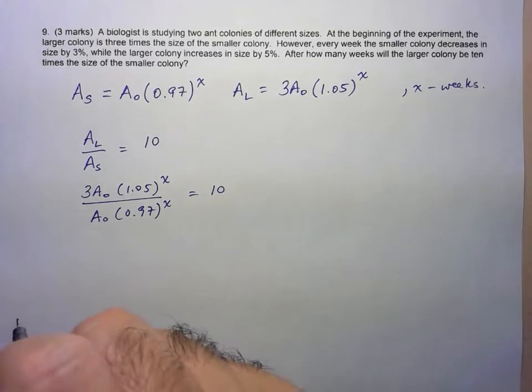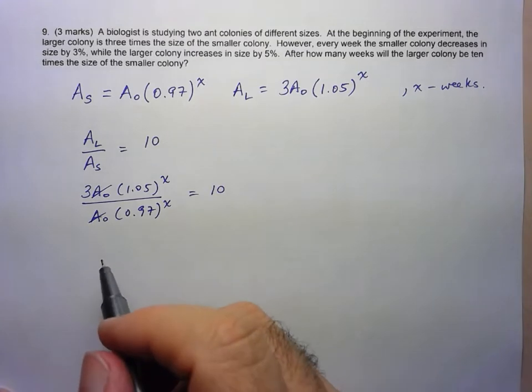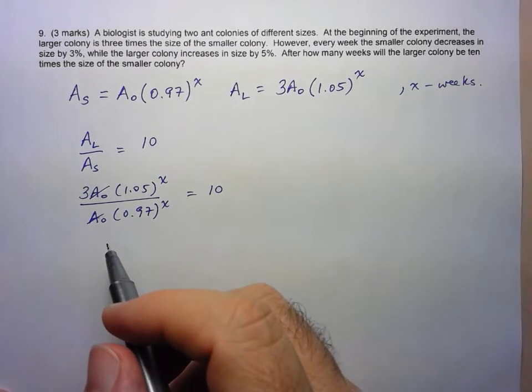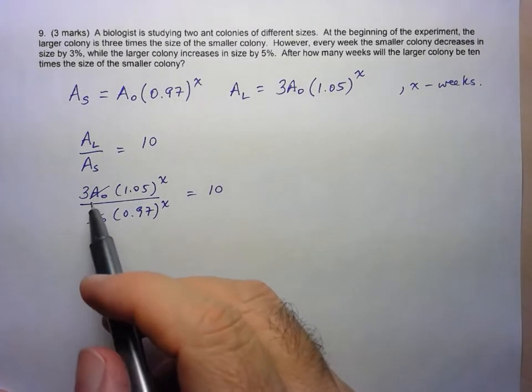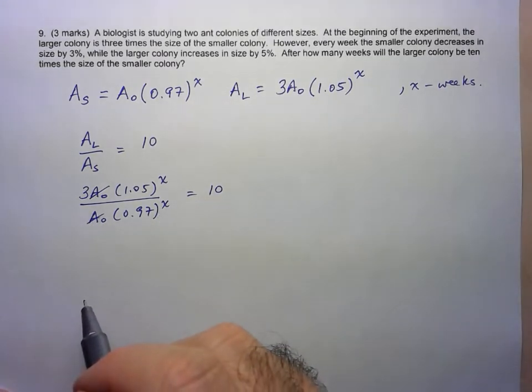And here we see that the A0s just reduce. And so regardless of what the initial population actually was, or the initial populations were, looks like we can solve this problem regardless of that actual number.